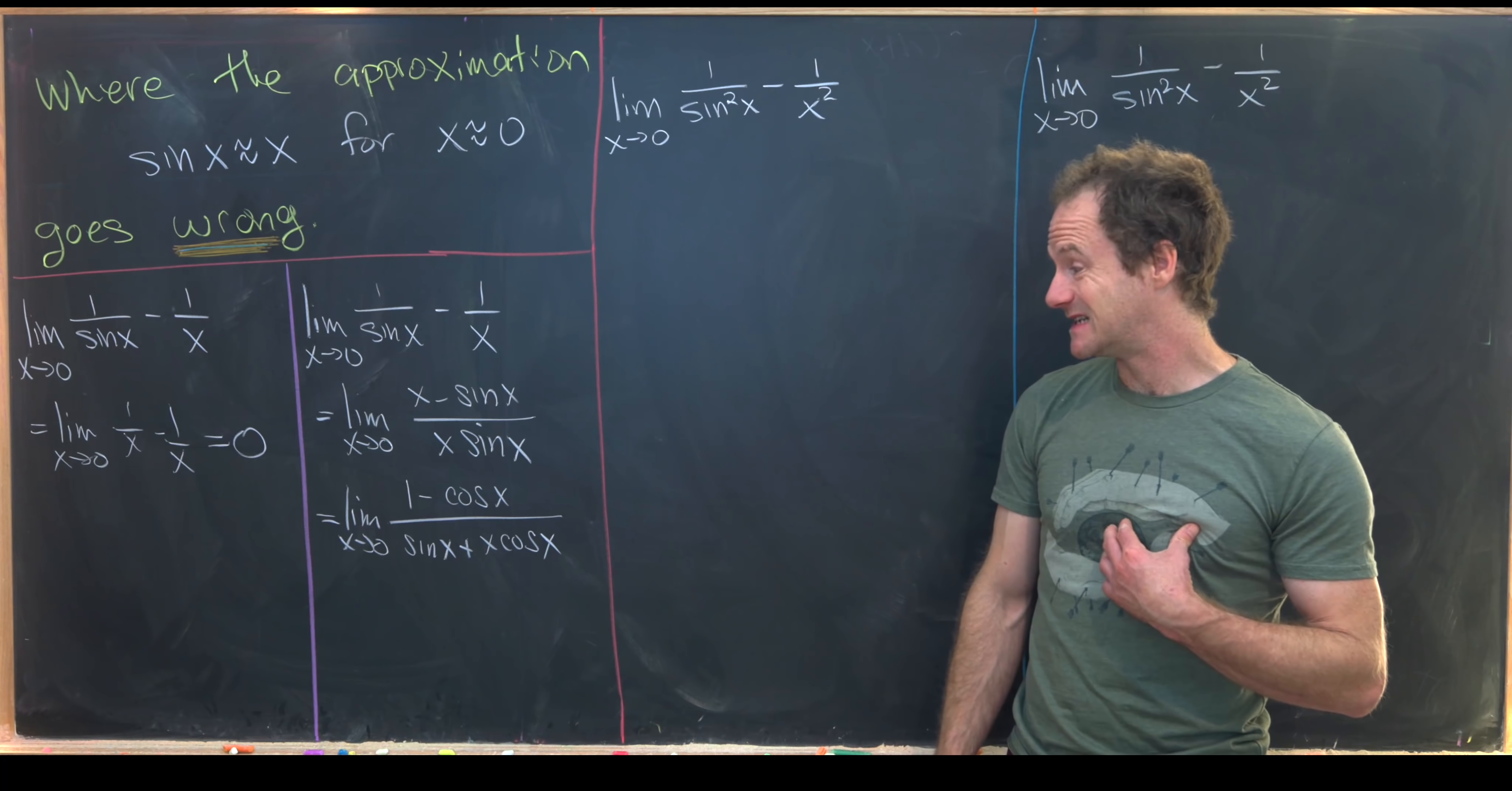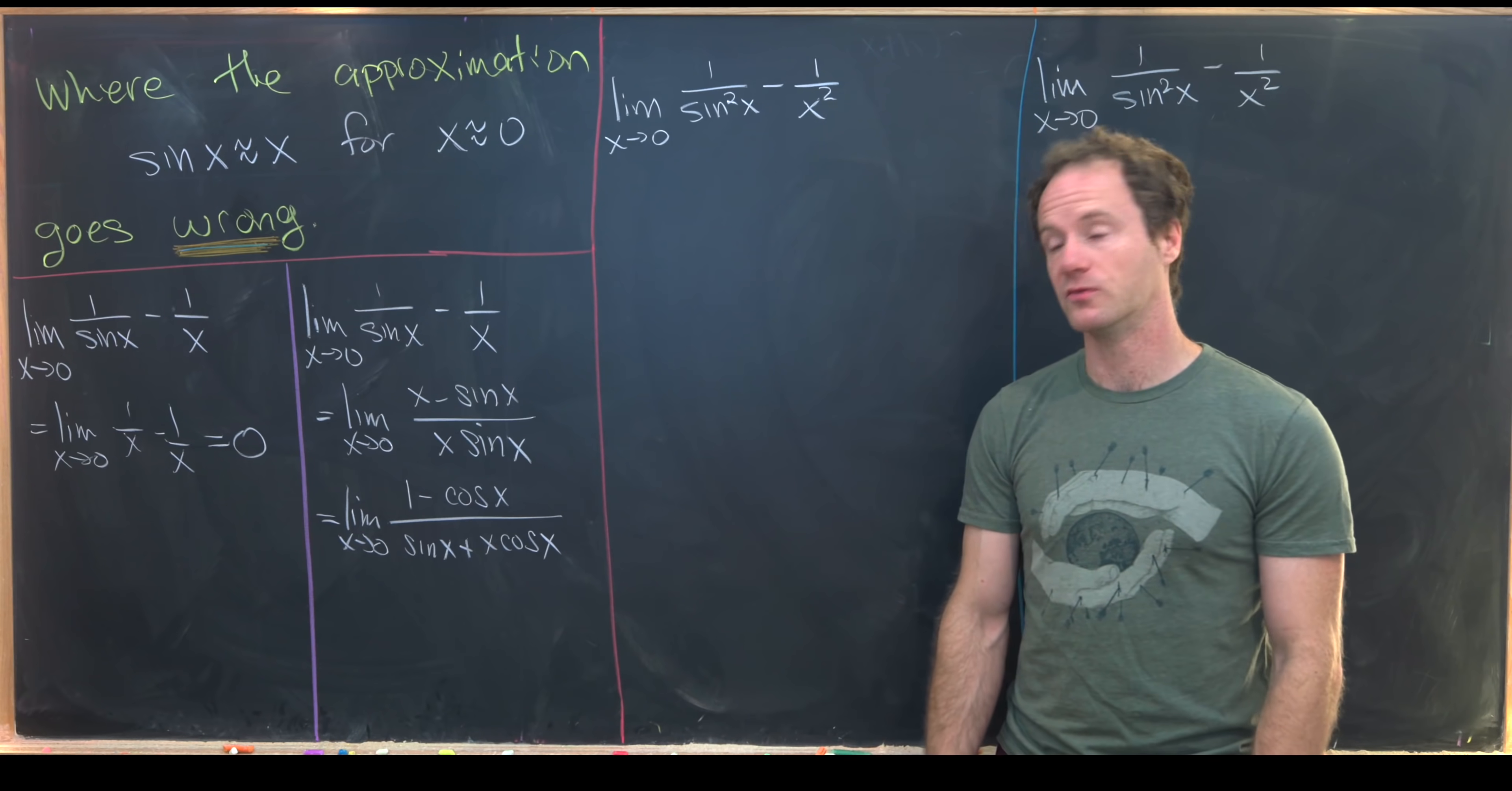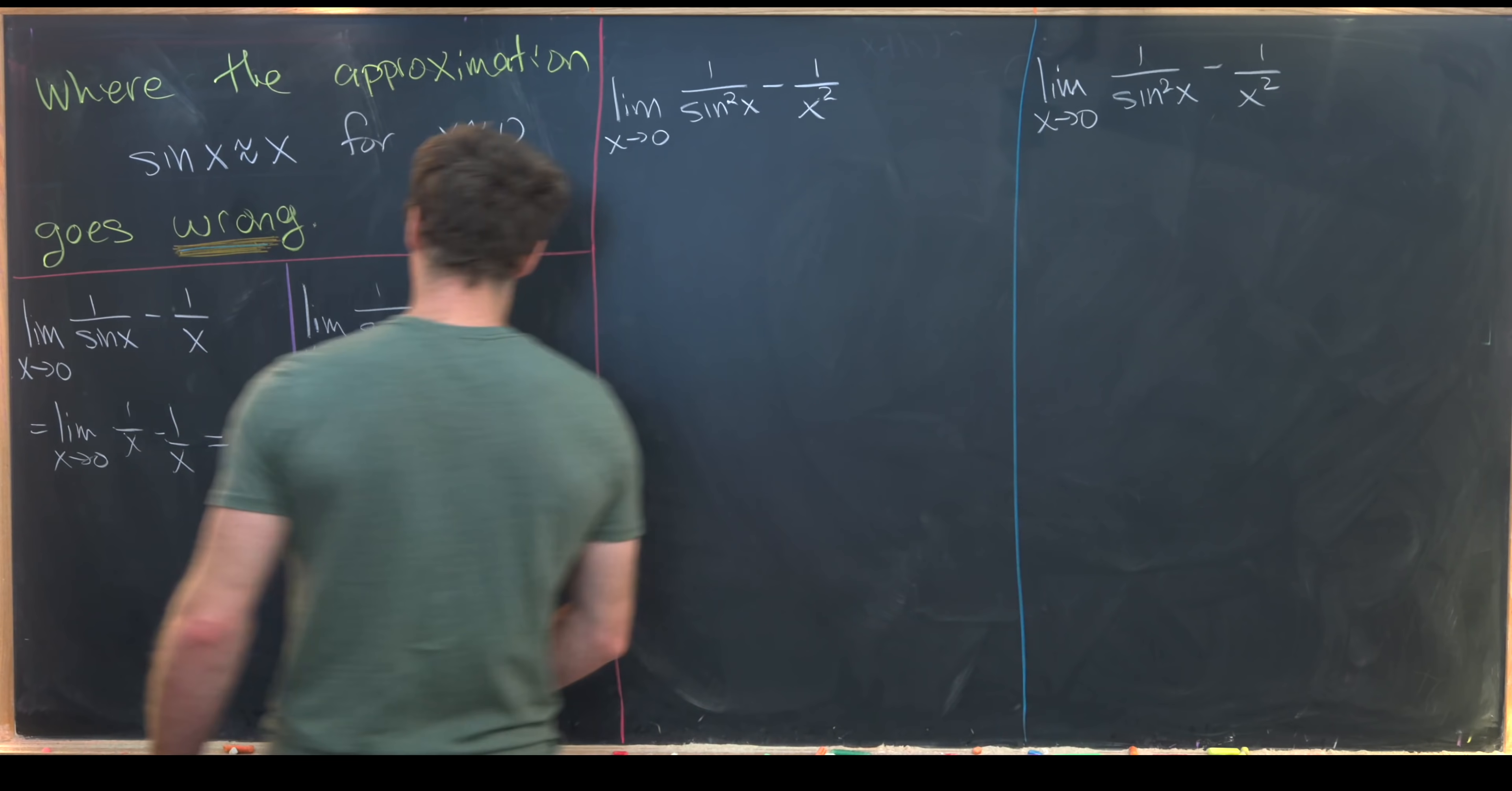Notice that this is still of type zero over zero because we've got one minus one occurring in the numerator. Then we have zero plus zero occurring in the denominator. So maybe let's use L'Hopital's rule one more time.